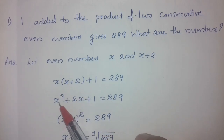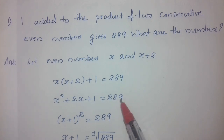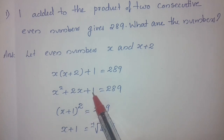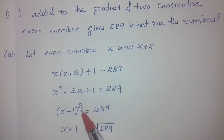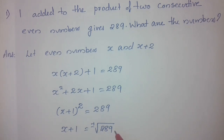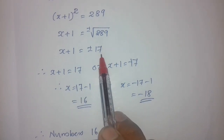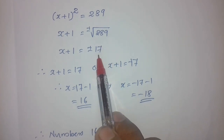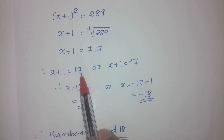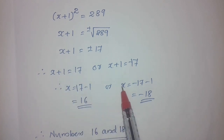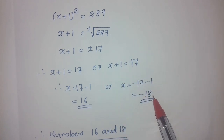Expanding: x squared plus 2x plus 1 is equal to 289, which is x plus 1 whole squared equals 289. Taking the square root: x plus 1 is equal to plus or minus root 289, which is plus or minus 17. So x equals 17 minus 1, that is 16, or x equals minus 17 minus 1, that is minus 18.